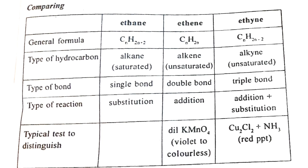Alkenes and alkynes, which have double bonds and triple bonds, can decolorize potassium permanganate (KMnO4) solution — turning it from violet/purple colour. So KMnO4 solution is also used to test for unsaturated hydrocarbons.